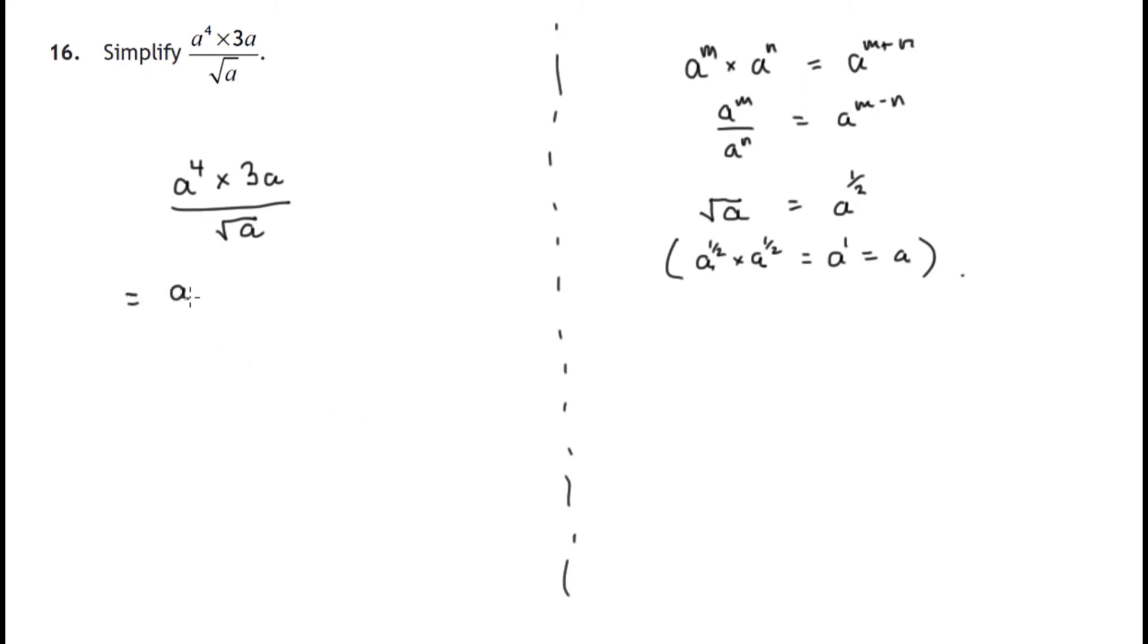So let's look at the top of this fraction. We've got an a to the power of 4 times 3 times an a, which is a to the power of 1. And the bottom of the fraction - we'll use this rule and write that as a to the power of 1 half.